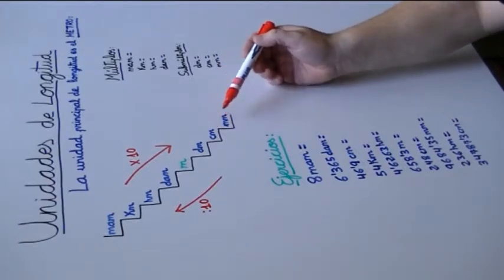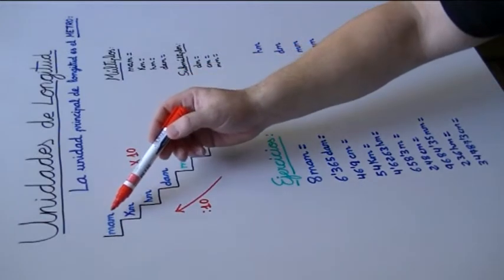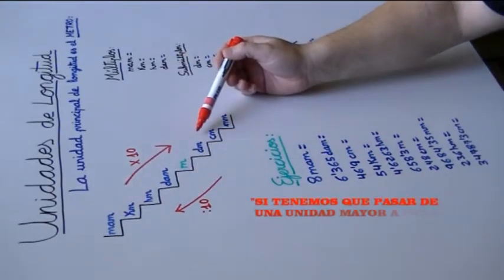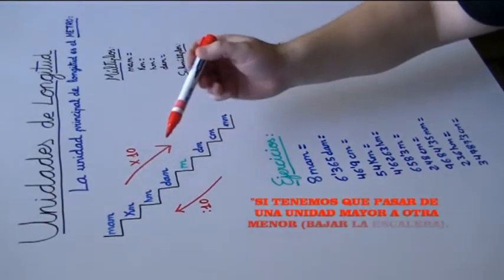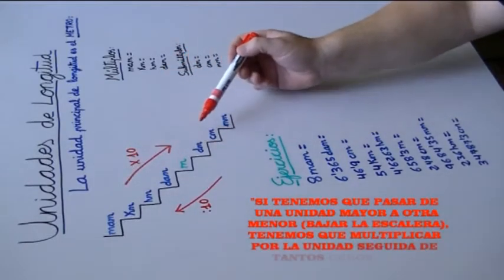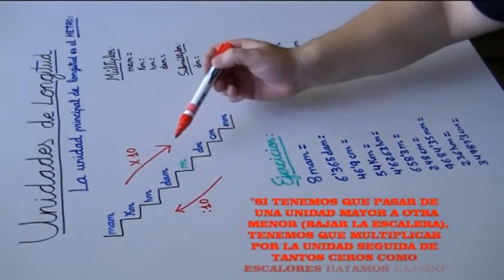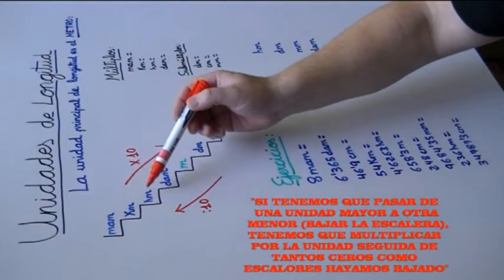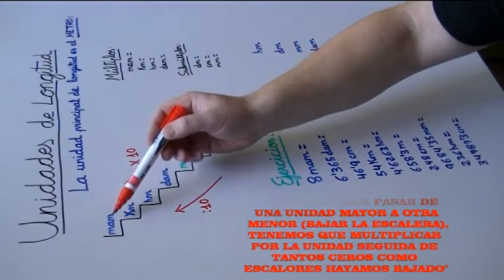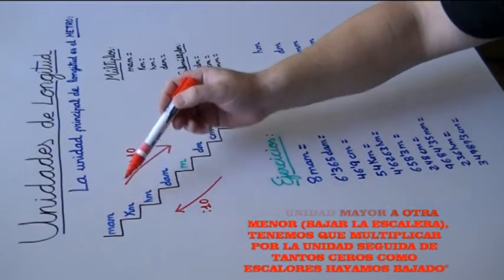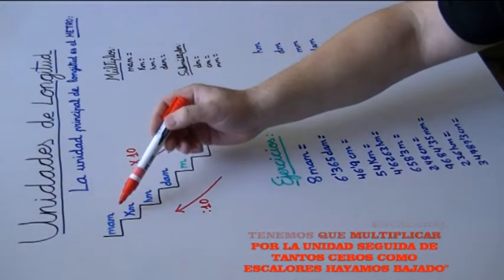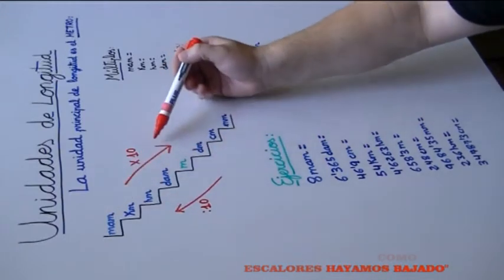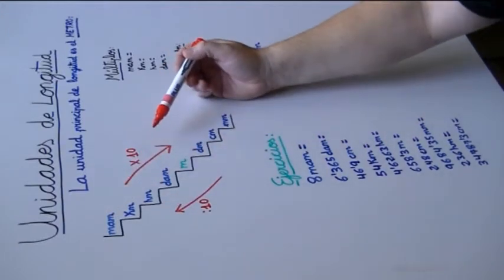Si queremos pasar de una unidad más grande a otra unidad más pequeña, o sea, bajar la escalera, tenemos que multiplicar por 10 cada escalón que bajemos. Si bajamos un escalón, multiplicamos por 10. Si bajamos dos escalones, por 100. Tres escalones por mil, y así sucesivamente.